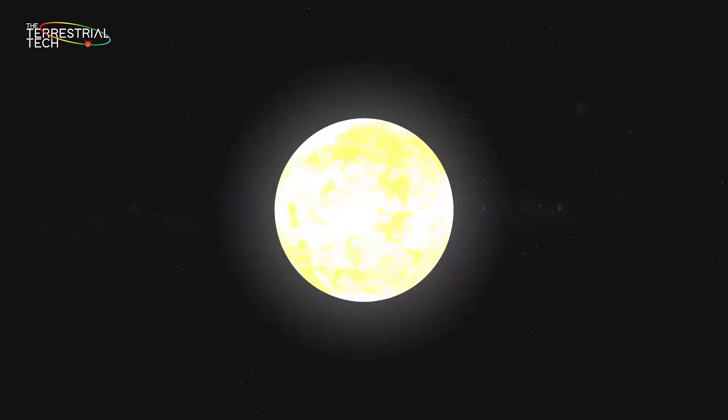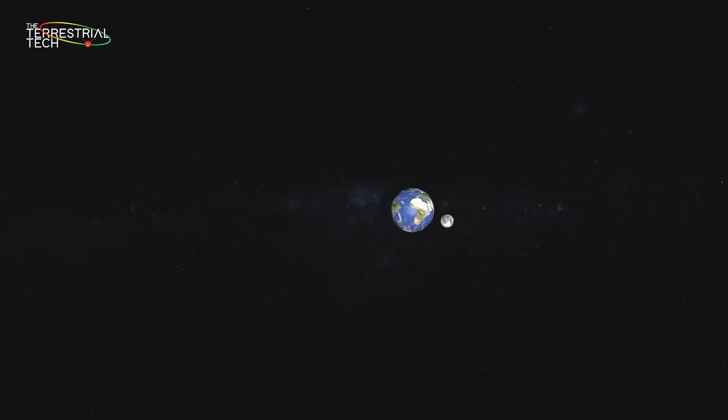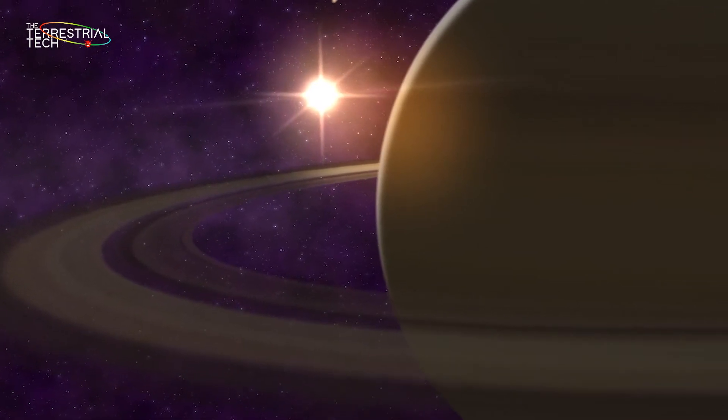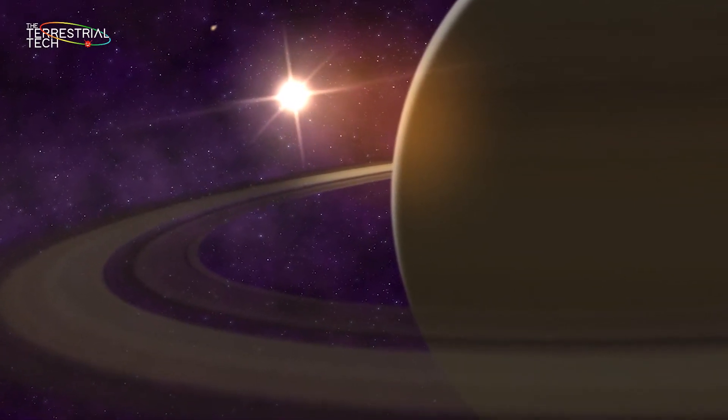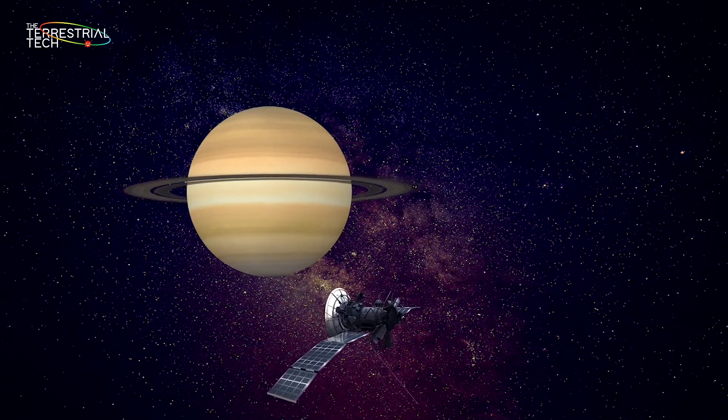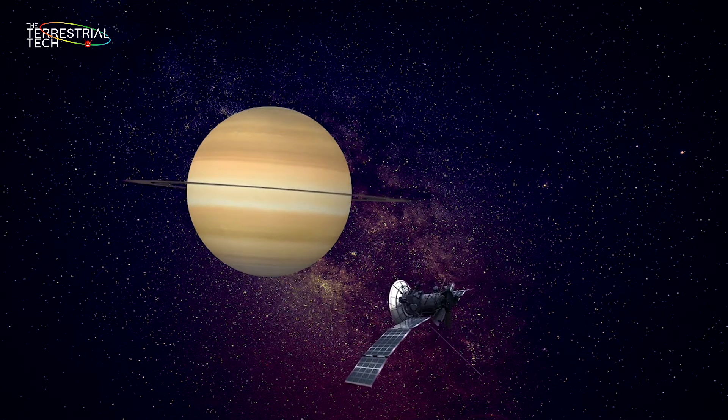There are many natural satellites in the solar system, in which every planet has at least one natural satellite. For example, Saturn has at least 53 natural satellites, and between 2004 and 2017 it also had an artificial satellite whose name was the Cassini spacecraft, which studied Saturn and its moons.